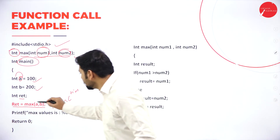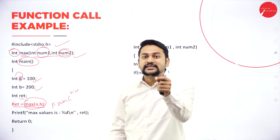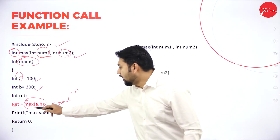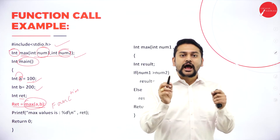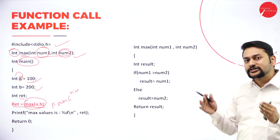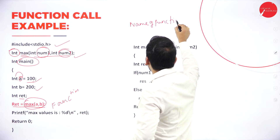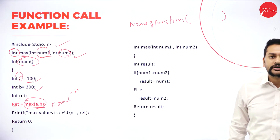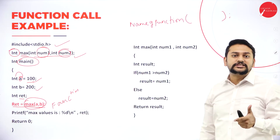Observe this: 'max' is the name of the function. I'm passing two parameters — a and b. The value of a is 100 and b is 200. You might wonder why I haven't mentioned the data type — when you are passing a value in a function call, you don't need to mention the data type for the variable. At the end of the statement, you have a semicolon. That is the syntax of the function call: write the name of the function, match the type and number of parameters, and end with a semicolon.